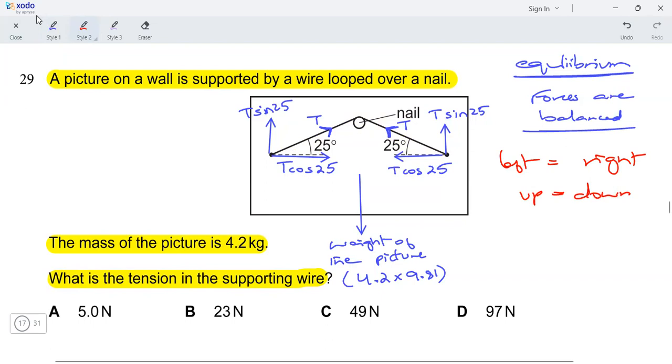Okay, so for the left and right forces, it would simply be T cosine 25 equals to T cosine 25, right? This is the force to the left, this is the force to the right. Okay, but this equation won't help us. Let's move on towards the up and down forces.